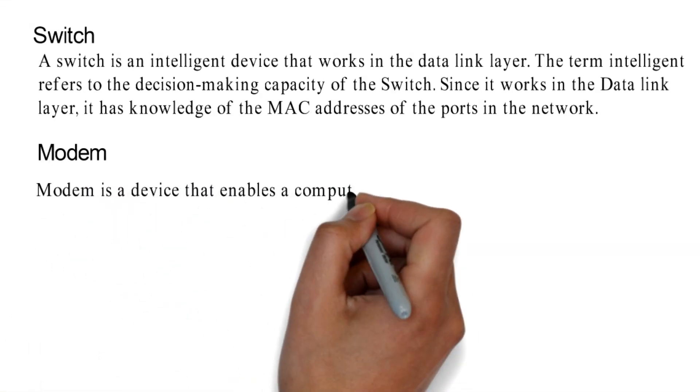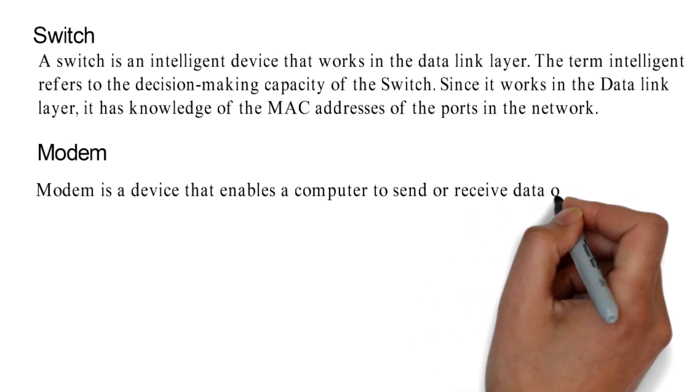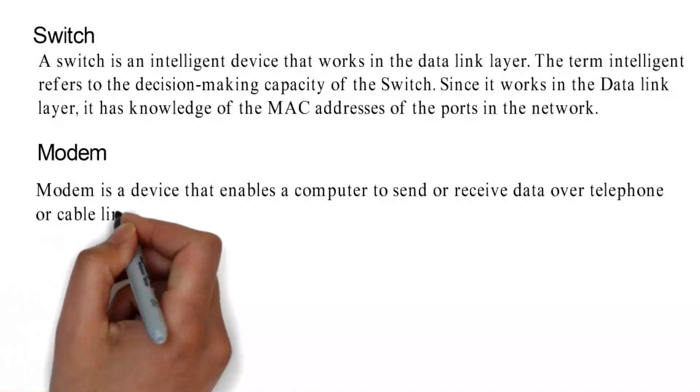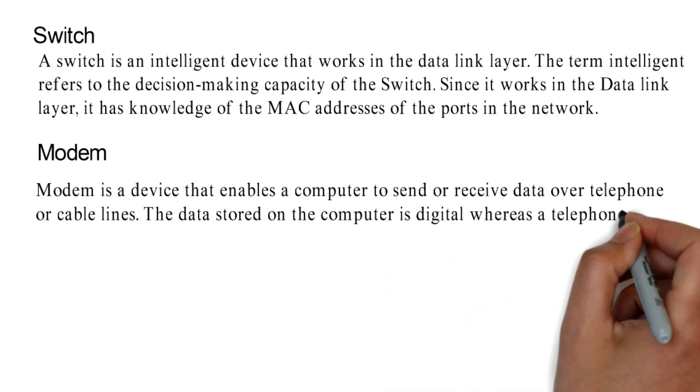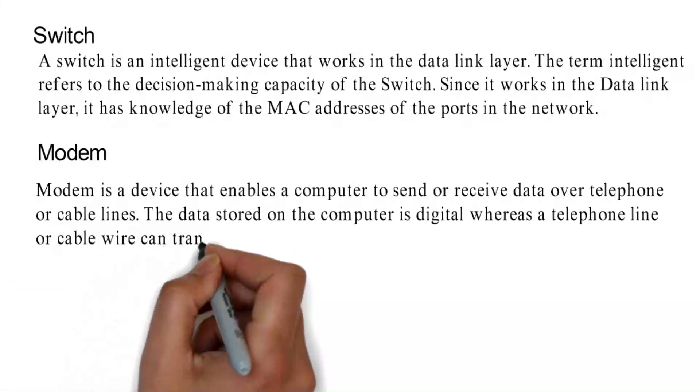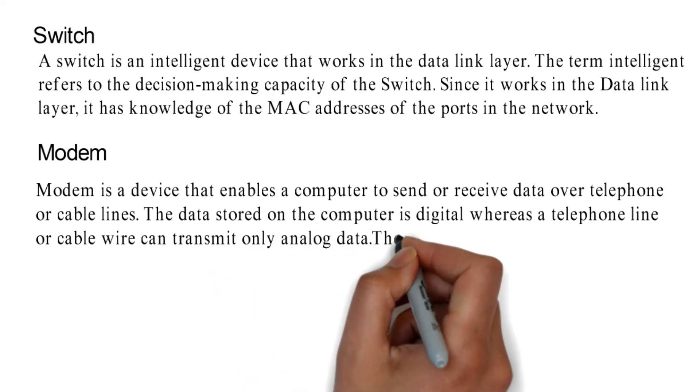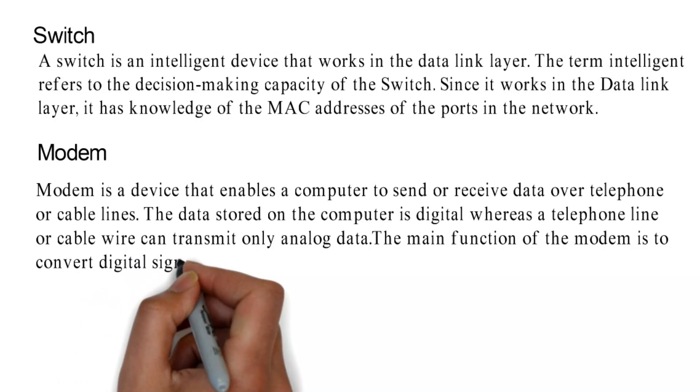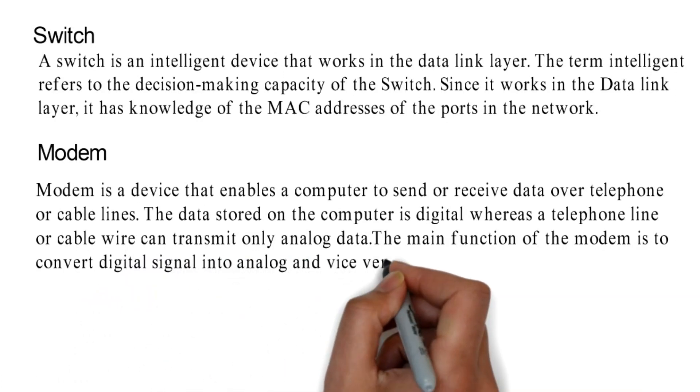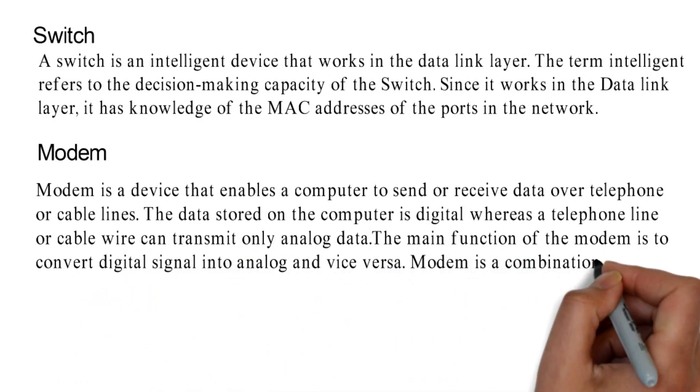Modem. Modem is a device that enables a computer to send or receive data over telephone or cable lines. The data stored on the computer is digital, whereas a telephone line or cable wire can transmit only analog data. The main function of the modem is to convert digital signal into analog and vice versa.